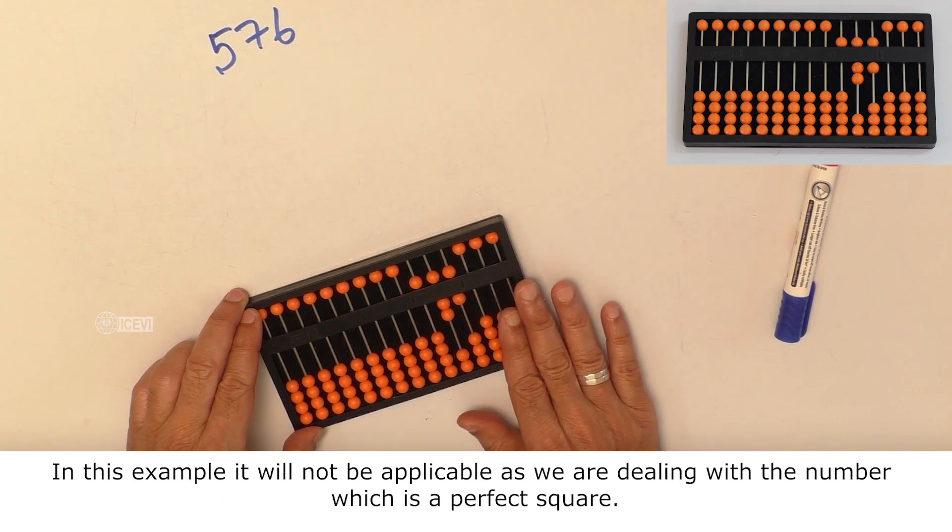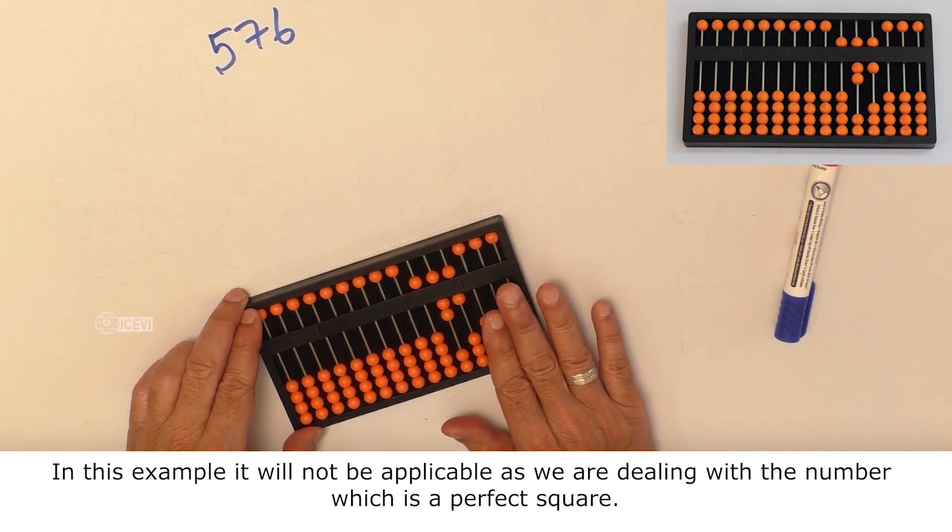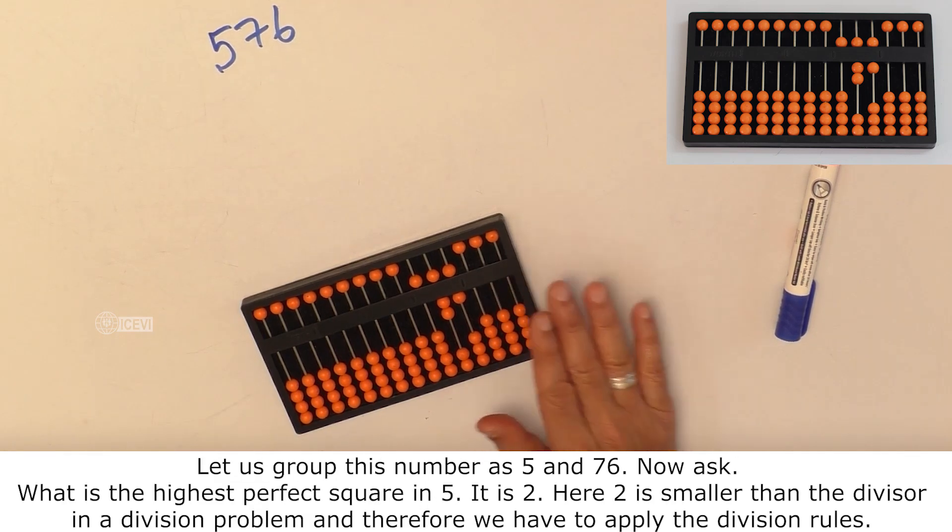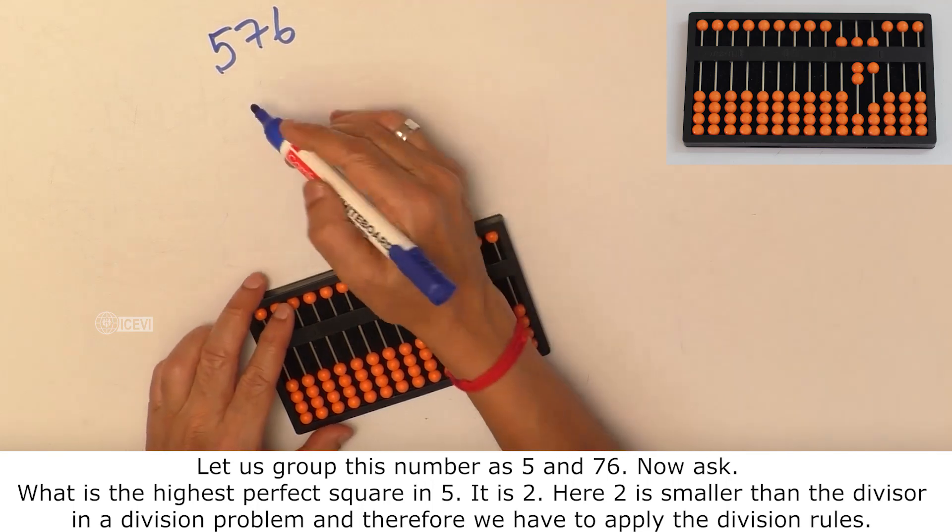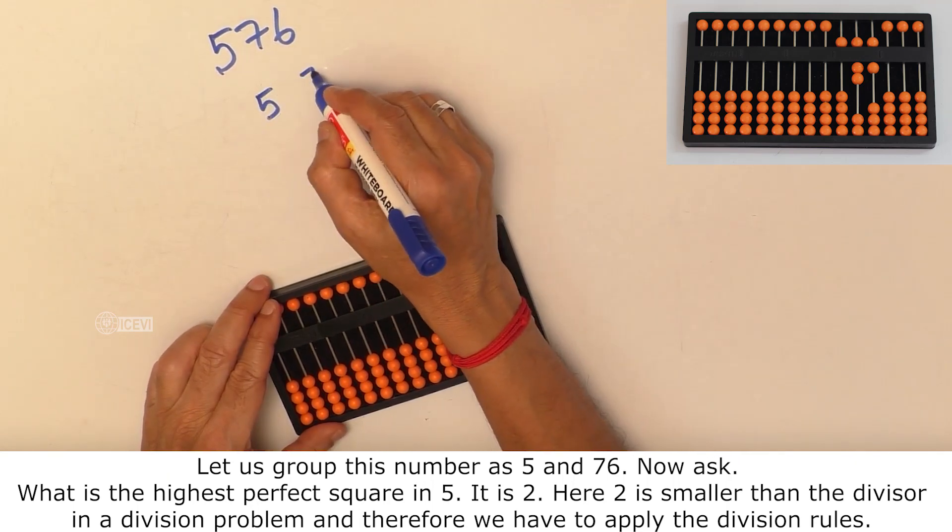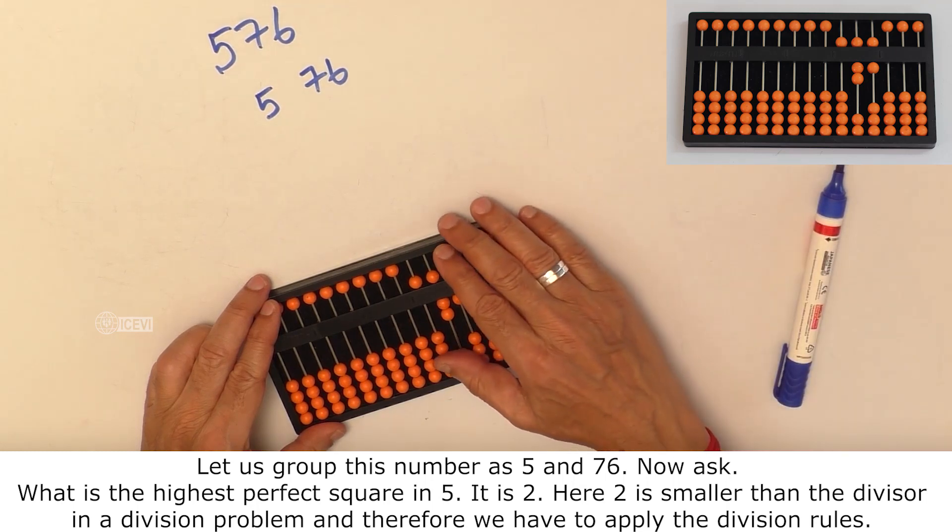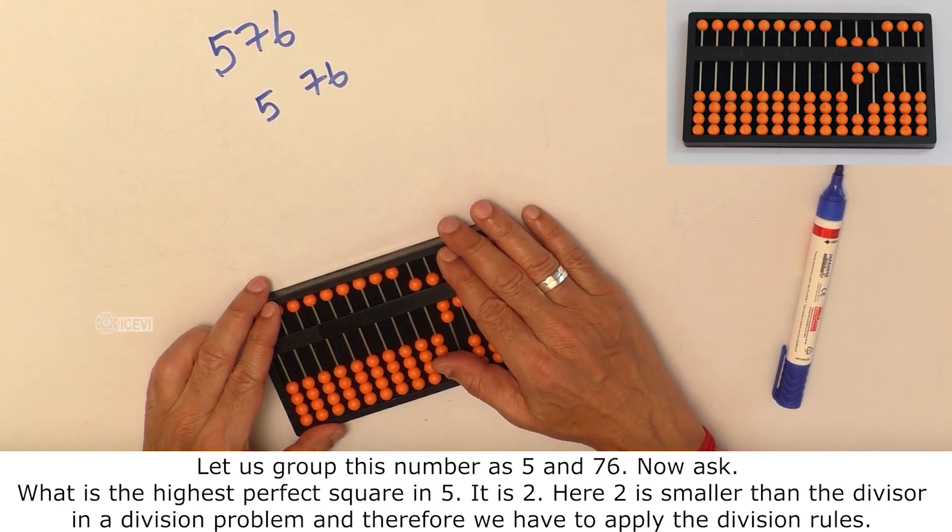In this example, it will not be applicable as we are dealing with the number which is a perfect square. Let us group the number as 5 and 76. Now ask, what is the highest perfect square in 5?